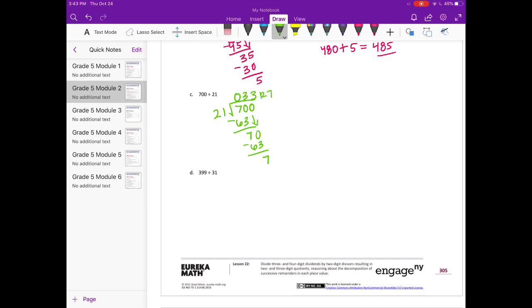And to check, I'm going to do 33 times 21. 33 times 21 is 693. And 693 plus 7 is equal to 700. So that works.